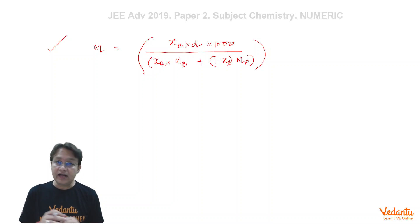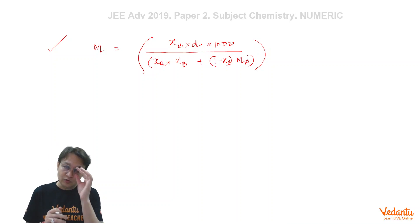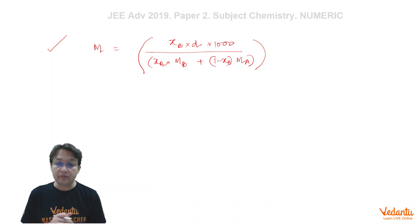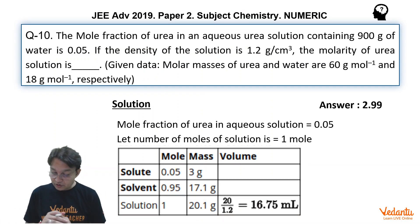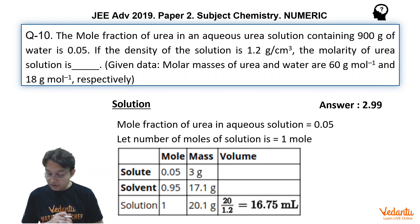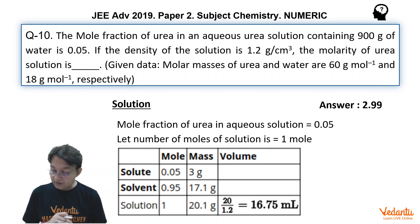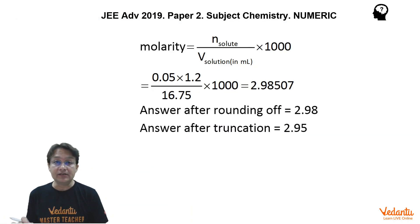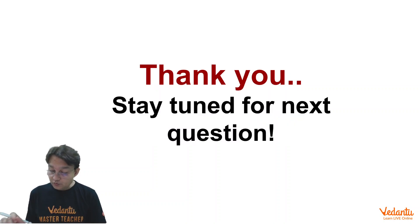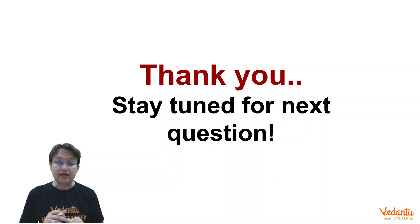But nevertheless you can relate molarity to the mole fraction using that expression. Pretty straightforward. Now you have a printed solution; here we have also done it in the simplest possible manner. The answer after truncation is 2.99. I hope that you understand this problem — quite an easy problem on the mole concept. Stay tuned for solutions to the next questions. Thank you.